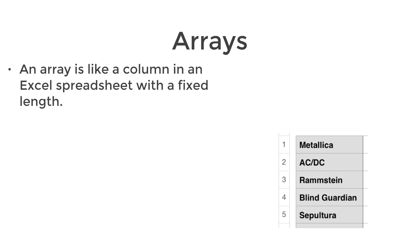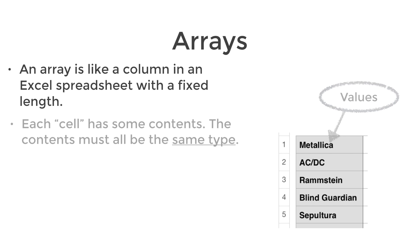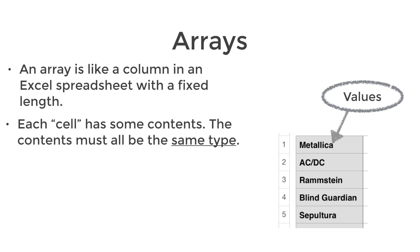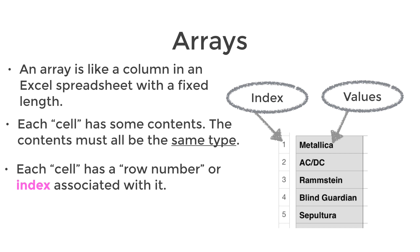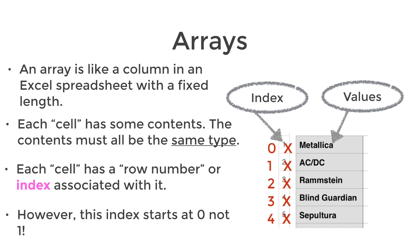Think of an array like a column in an Excel spreadsheet with a fixed length. Each cell has some contents, and the contents are all of the same type, say strings. Each cell also has a row number or an index associated with it. The important thing to remember in Java is that this index starts at zero, not one. So the first element has index value zero.